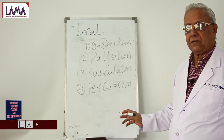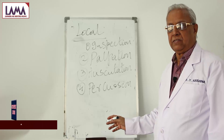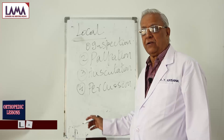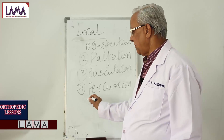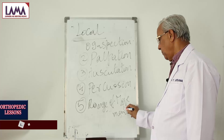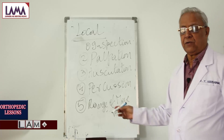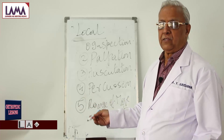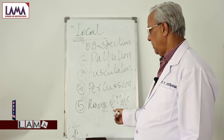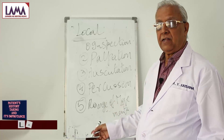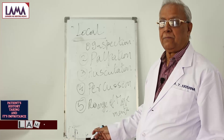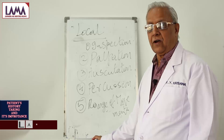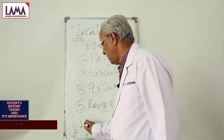But when compared to all other systems of the body, the most important thing here in orthopedics is the range of movement of the joints, which is very, very important. Range of movements in each joint that we are going to examine, depending upon the presentation, is very, very important. Then the length of the limb also takes a very important role in orthopedics — that is, measurements.